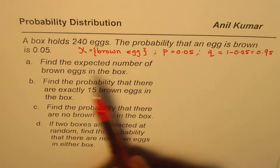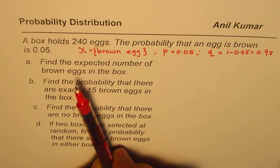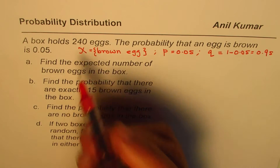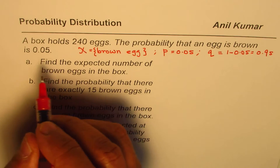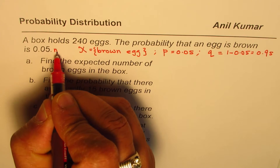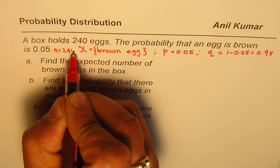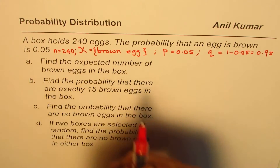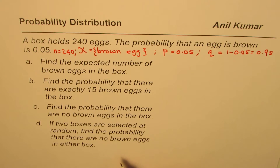With that, let's answer the questions. Also, N equals 240. We are going to use these values to calculate the answers for all parts.